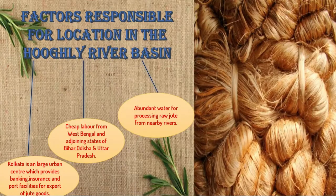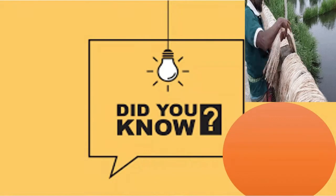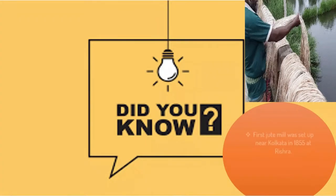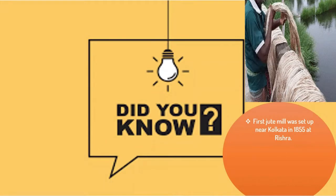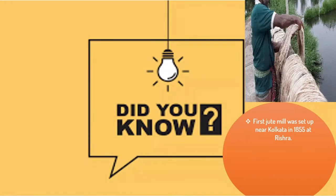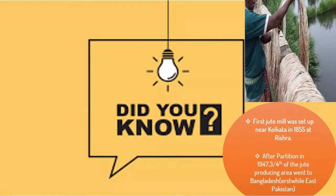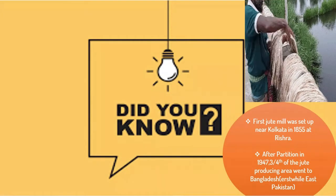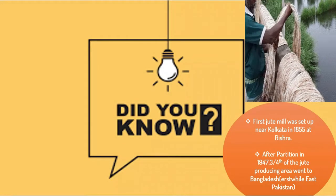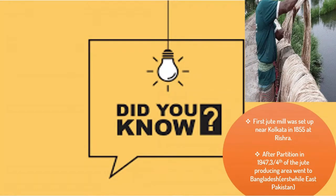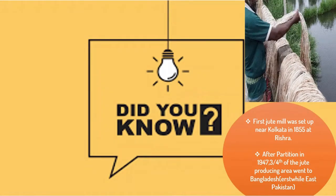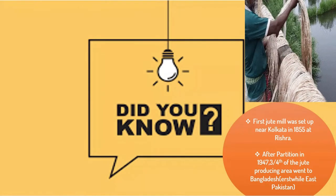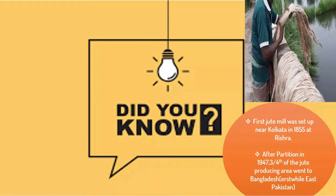The first jute mill was set up near Kolkata in 1855 at Rishra. After partition in 1947, three-fourths of the jute producing area went to Bangladesh. So had there been no partition, the whole jute producing region would have been in India itself. Now let us look at the challenges faced by the jute industry.